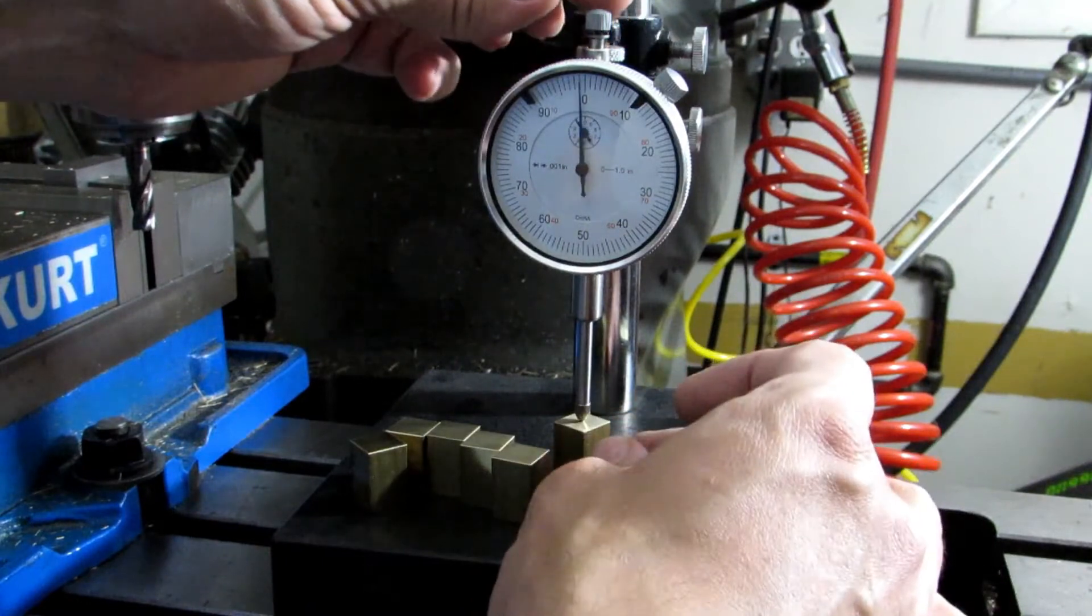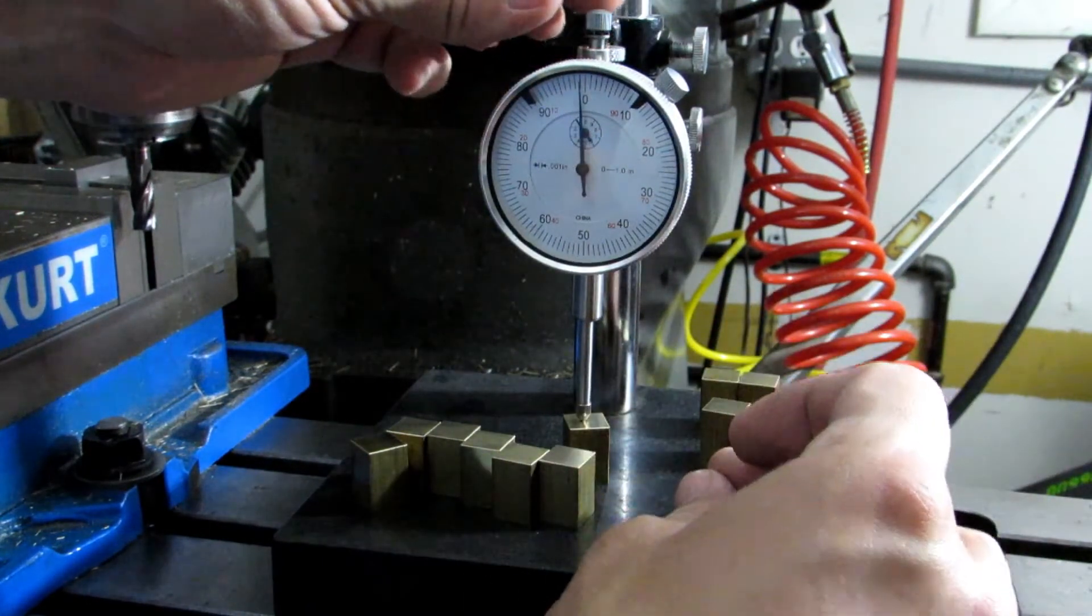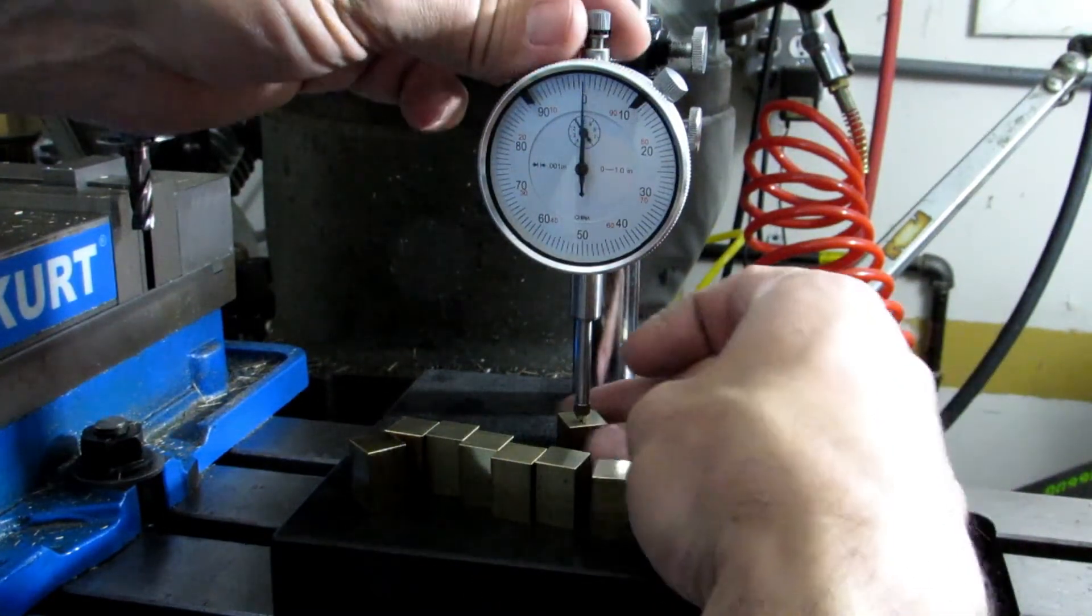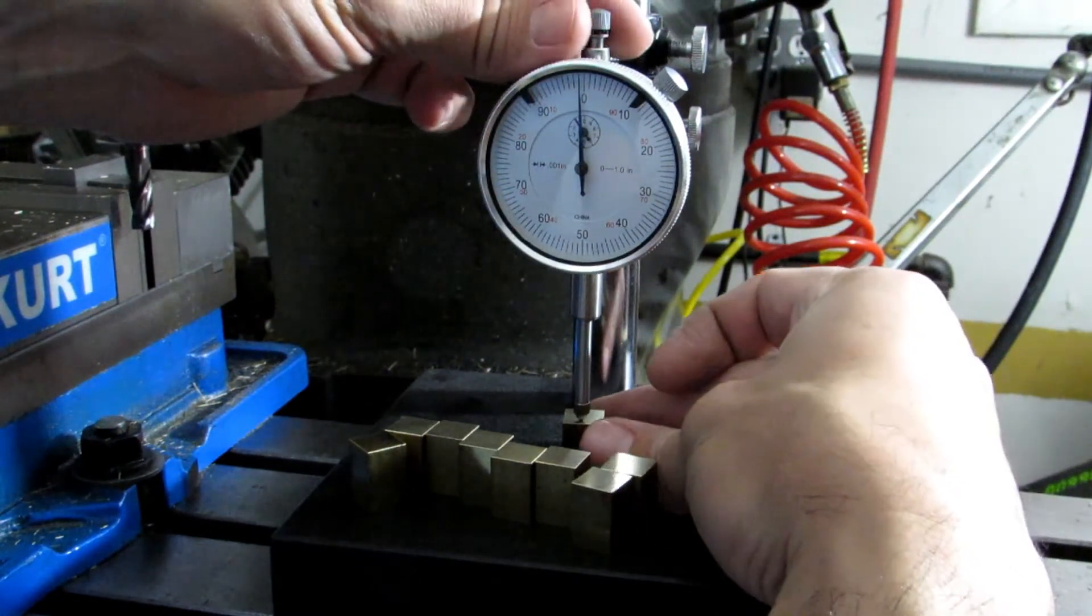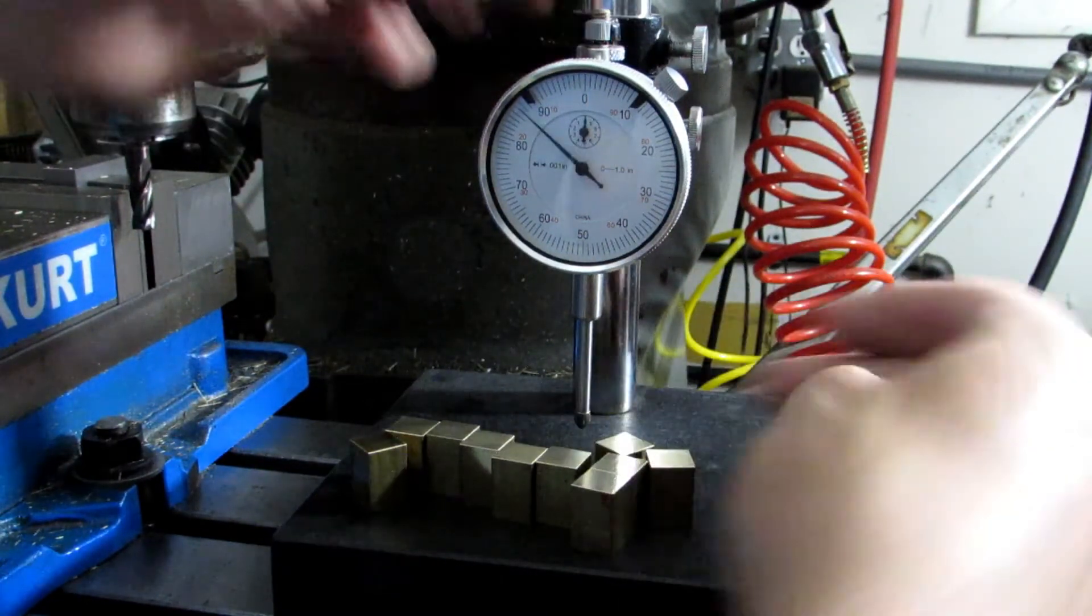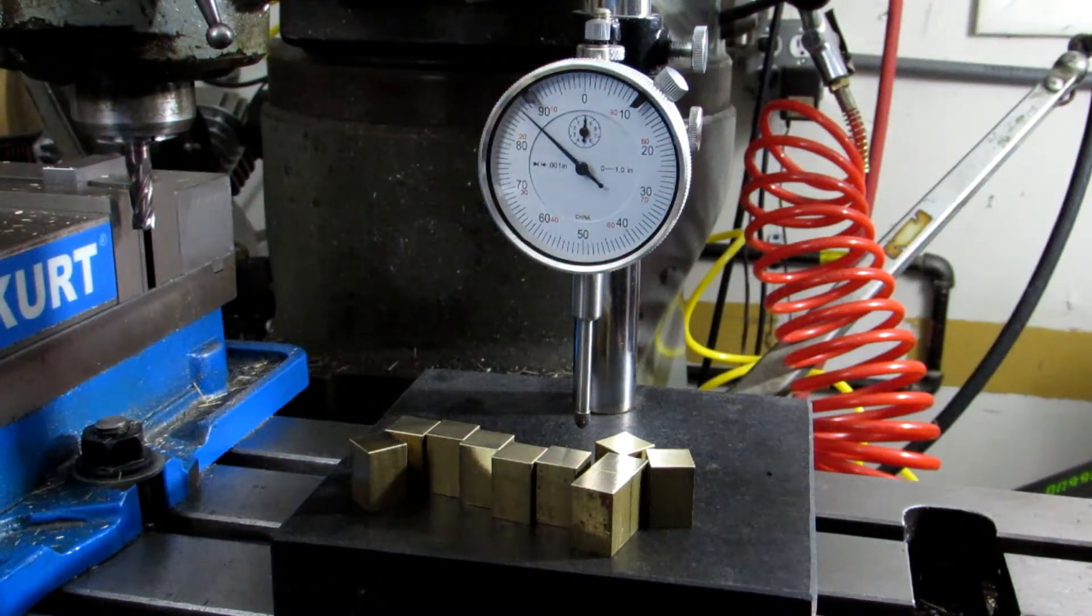Just under a thousandth under. About a thousandth under. Thousandth under. Right on the money. Maybe nine tenths under.